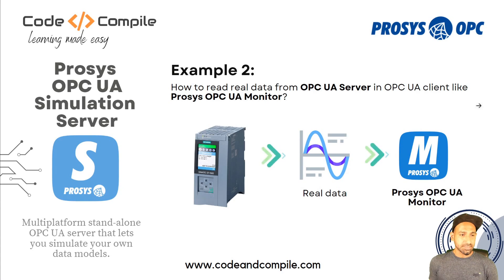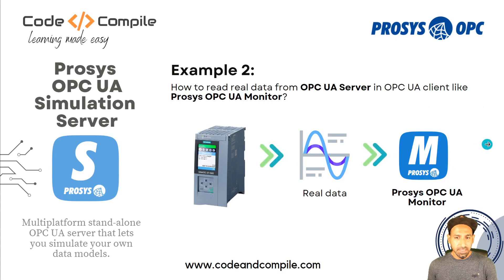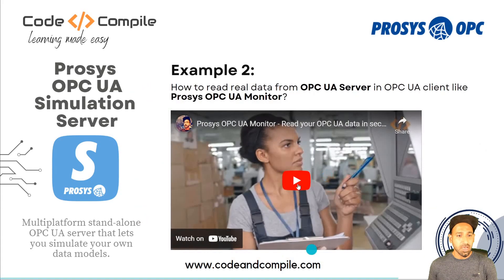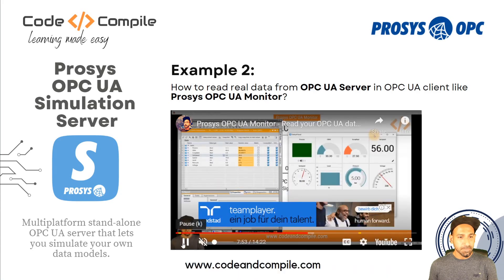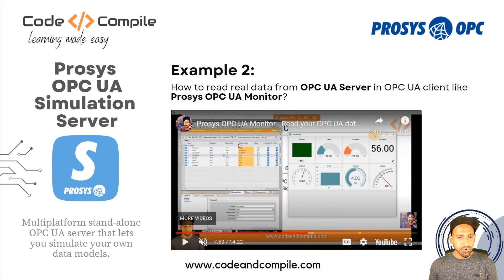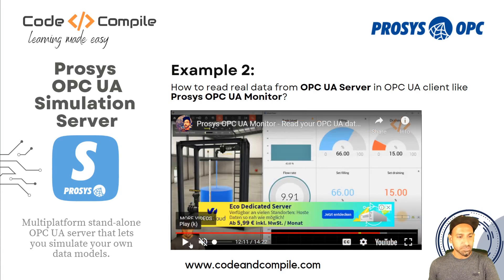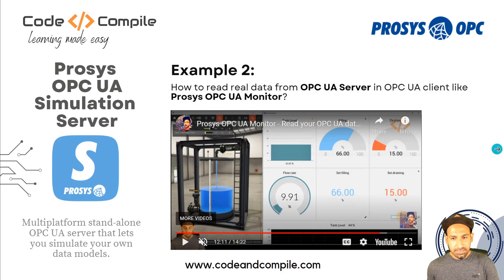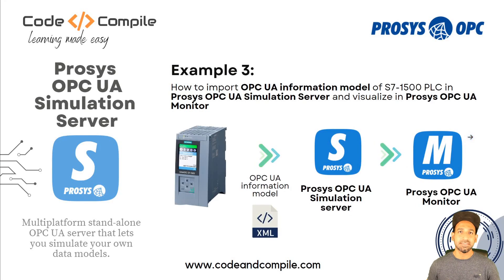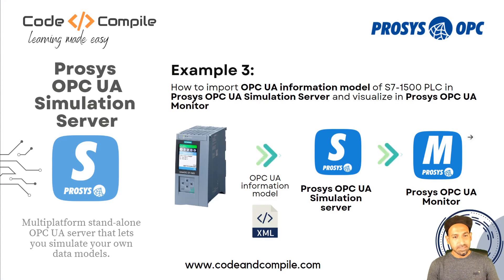For reading data from a real S7-1500 PLC via OPC UA, I have already made a video explaining how to read values from the PLC's OPC UA server and display them with gauges in real time. I mention this here because in case you don't have a PLC — if you're in the testing or project phase, not yet on the factory floor — you can still test your OPC UA information model. The question is: how do you get the PLC's OPC UA model into the simulation server to test it without real hardware?